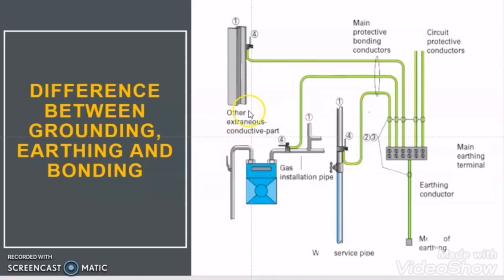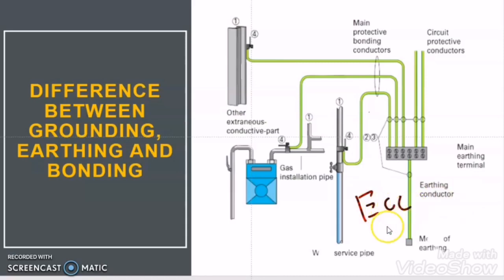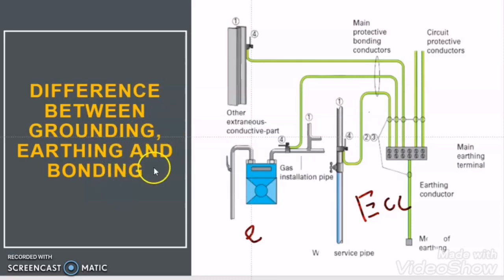In this video we will also try to disclose the difference between main protective bonding conductor, circuit protective conductor, earthing conductor, ECC conductor, and equipotential conductor. If we know in depth what is grounding, what is earthing, and what is bonding, then we can easily differentiate between them.